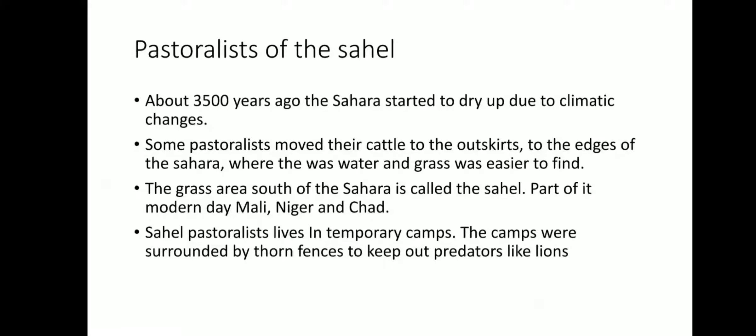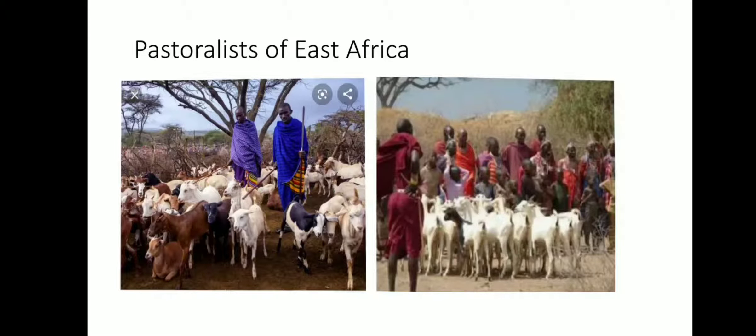Part of the Sahel is modern-day Mali, Niger, and Chad. The pastoralists got the name 'Sahel pastoralists' because they moved to the outskirts and edges of the Sahara, as it was becoming too hot and turning into a desert. They decided to continue being pastoralists but wanted a place where their animals could drink water and eat grass. So they moved to the Sahel. Sahel pastoralists lived in temporary camps surrounded by thorn fences to keep out predators such as lions.